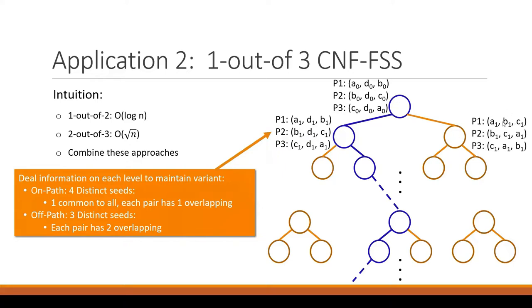Meanwhile, in the off-path cases, there's three distinct seeds instead of four, and each party has all three of them. Now, of course, this is no longer two out of three secure because if any two parties compare their seeds, they'll see when they're off-path, the three seeds exactly match, and if they're on path, two of their three seeds will match.